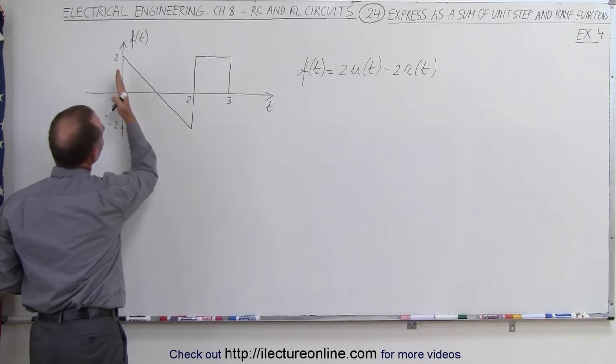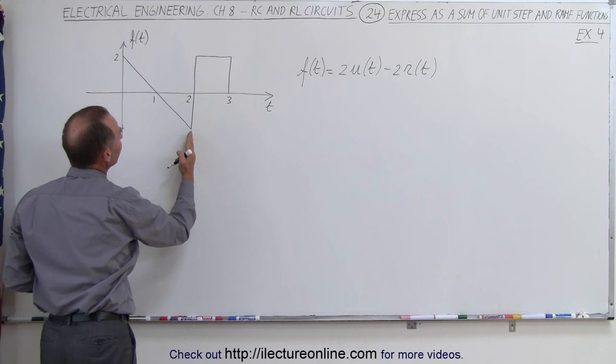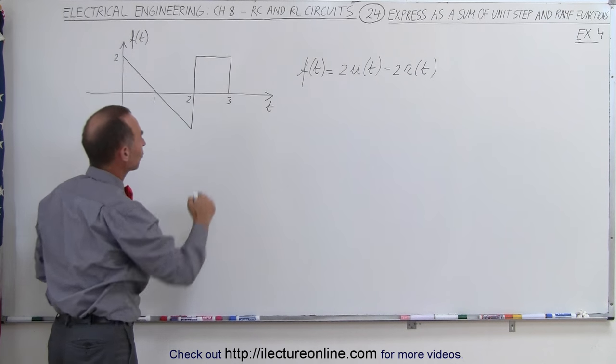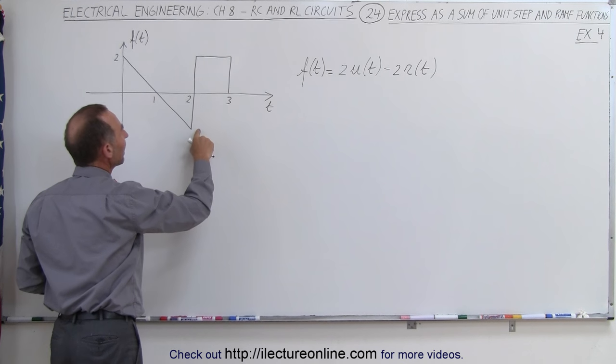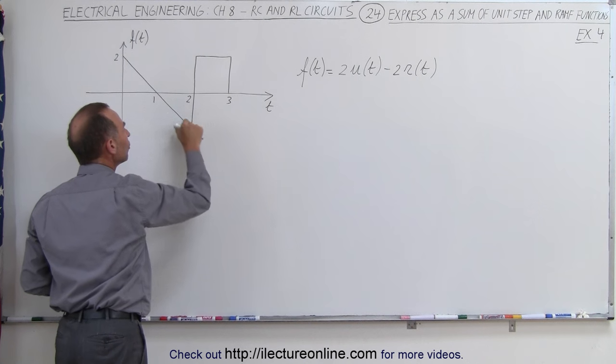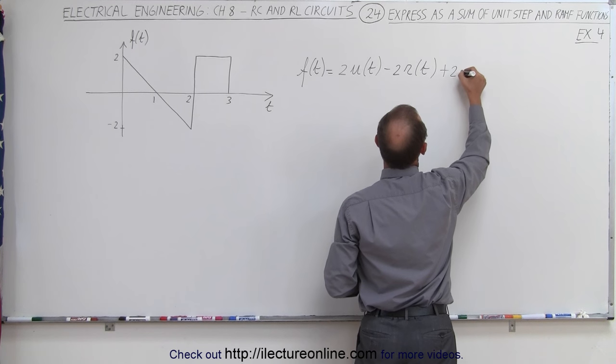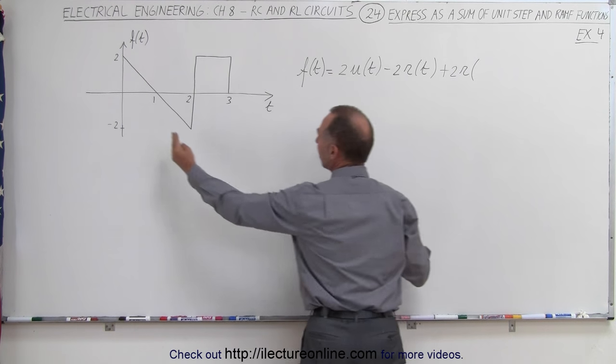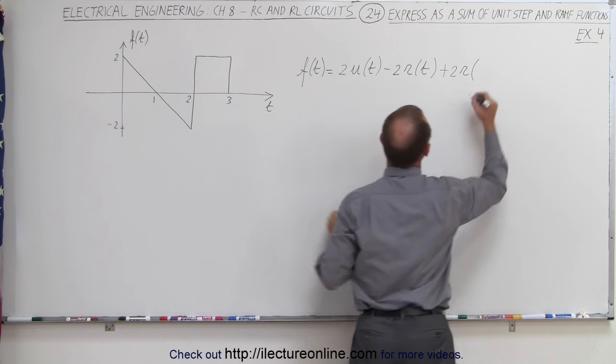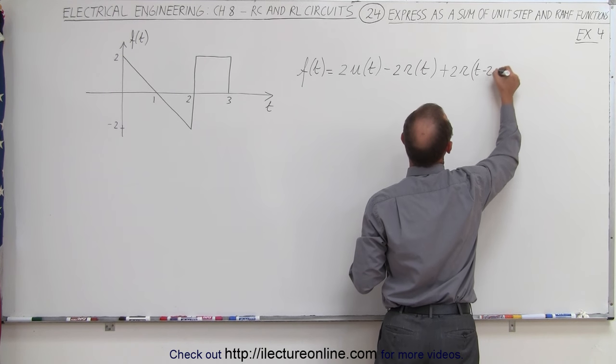That continues on for 2 seconds. Now we need to negate the ramp, so now we need to pull it even, so we need to add a positive ramp to negate the negative ramp. So that would be plus 2 times the ramp time function, but this one is offset by 2 seconds, so it would be t minus 2.